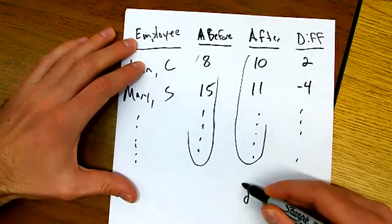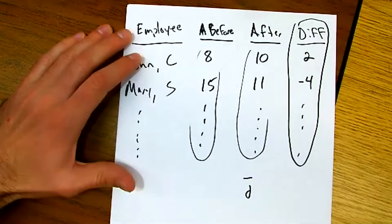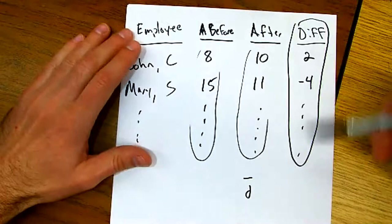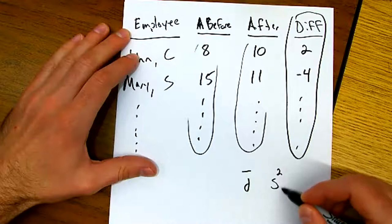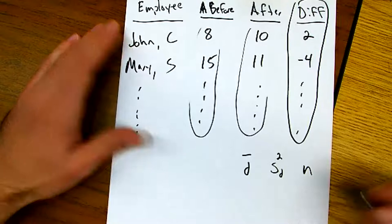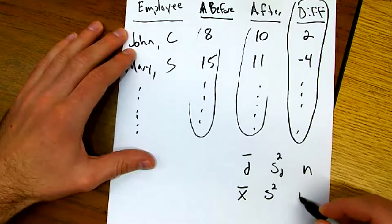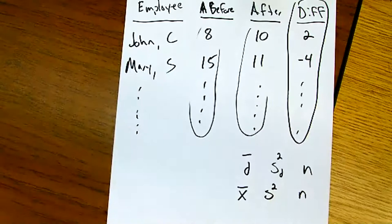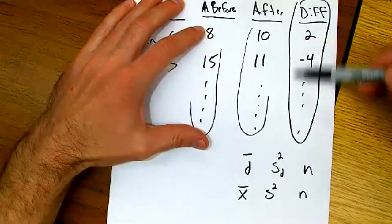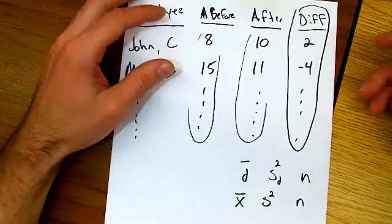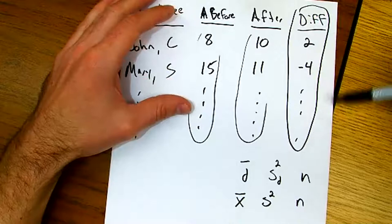Now what I'm going to do is calculate the average difference, so I'm back to just having one variable. I've got a before and after time period. I create this new difference variable, then I can find the mean, the variance, and the sample size. Instead of finding the difference in two sample means, we're finding the mean of this difference variable — that's a key distinction.